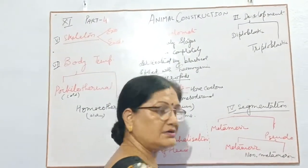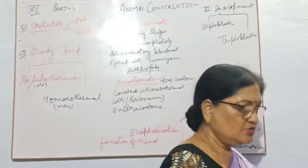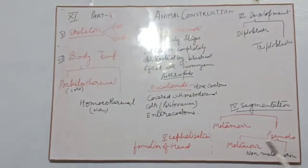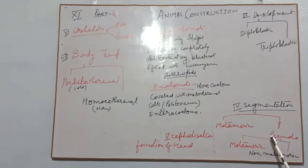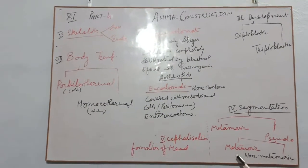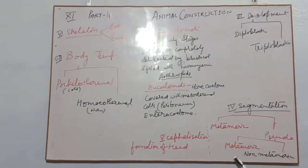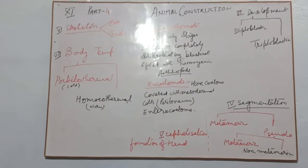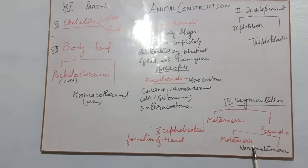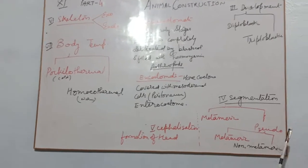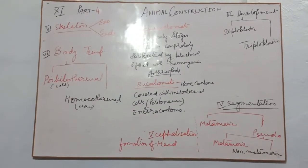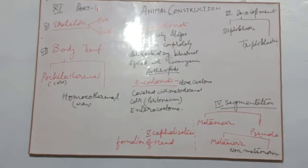Metameric segmentation means those organisms having all the segments in their body in a proper shape and size with organelles, and their number remains the same throughout their species and throughout their life. These are known as metameric segmentation.